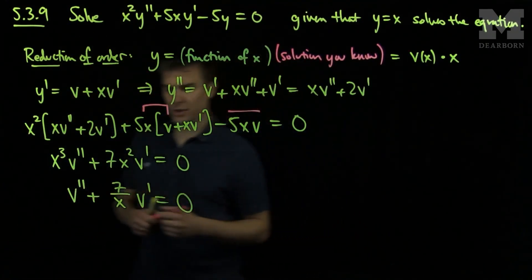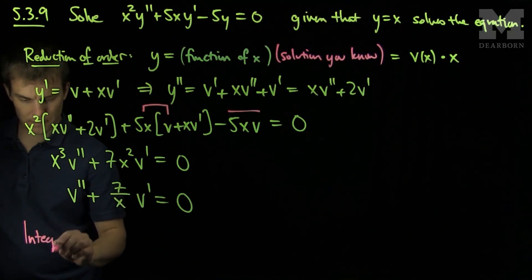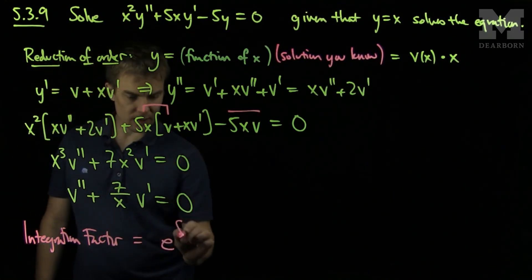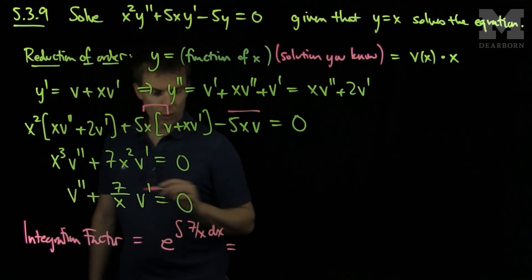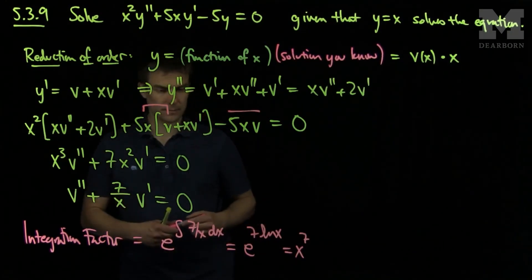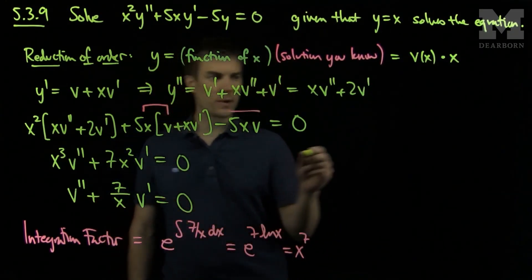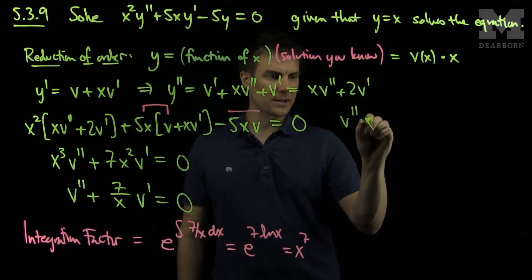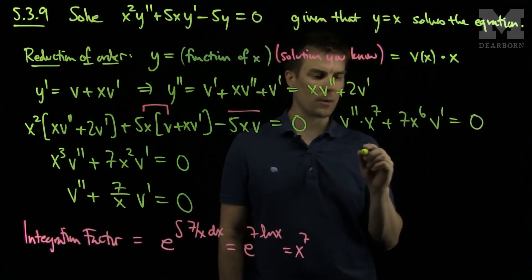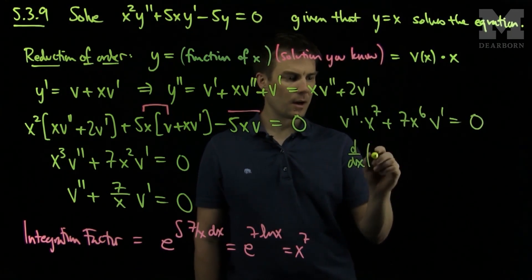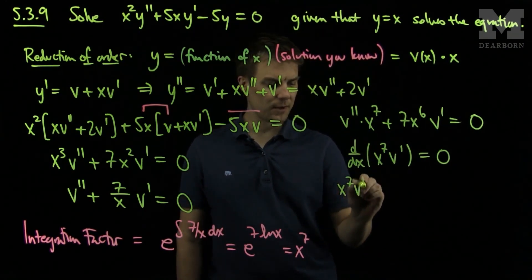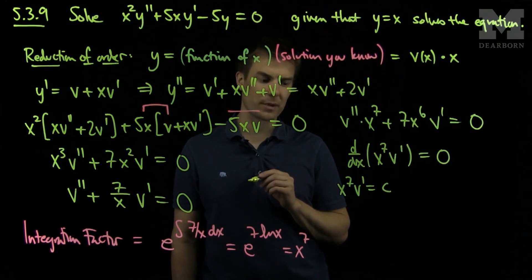We can solve this equation for v by using an integrating factor. Our integrating factor will be e to the integral of 7 over x dx, which is e to the 7 log x, or just x to the 7th power by properties of logarithms. Multiplying through, we get x to the 7th times v double prime plus 7x to the 6th times v prime equals zero, which is the derivative of (x to the 7th times v prime) equals zero.